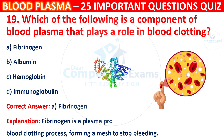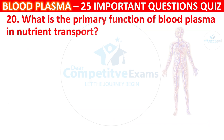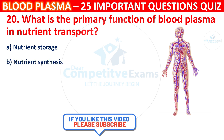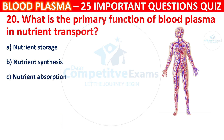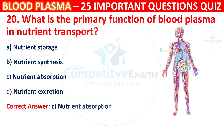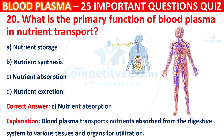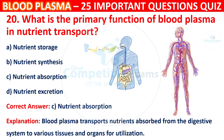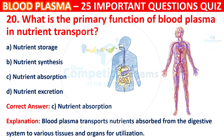Question 20: What is the primary function of blood plasma in nutrient transport? Your options are Nutrient storage, Nutrient synthesis, Nutrient absorption, or Nutrient excretion. The correct answer is C, i.e. Nutrient absorption. Blood plasma transports nutrients absorbed from the digestive system to various tissues and organs for utilization.